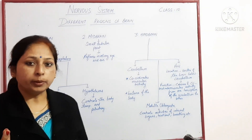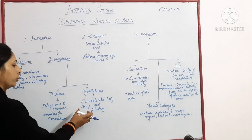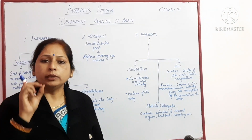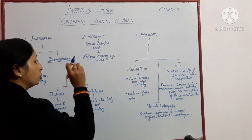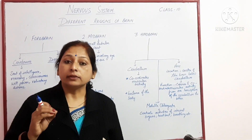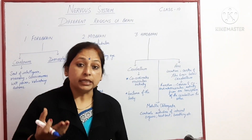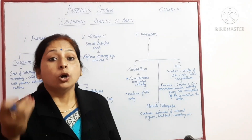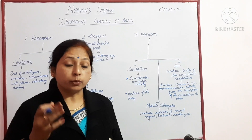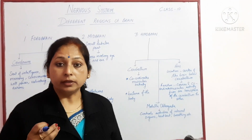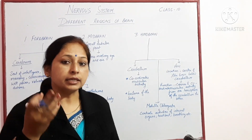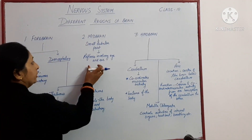Next is the midbrain. Midbrain is a small tubular part and its role is for reflexes involving the eyes and ears. Whatever we see, observe, or hear — all these reflexes and our body's responses to them — are related to the midbrain.